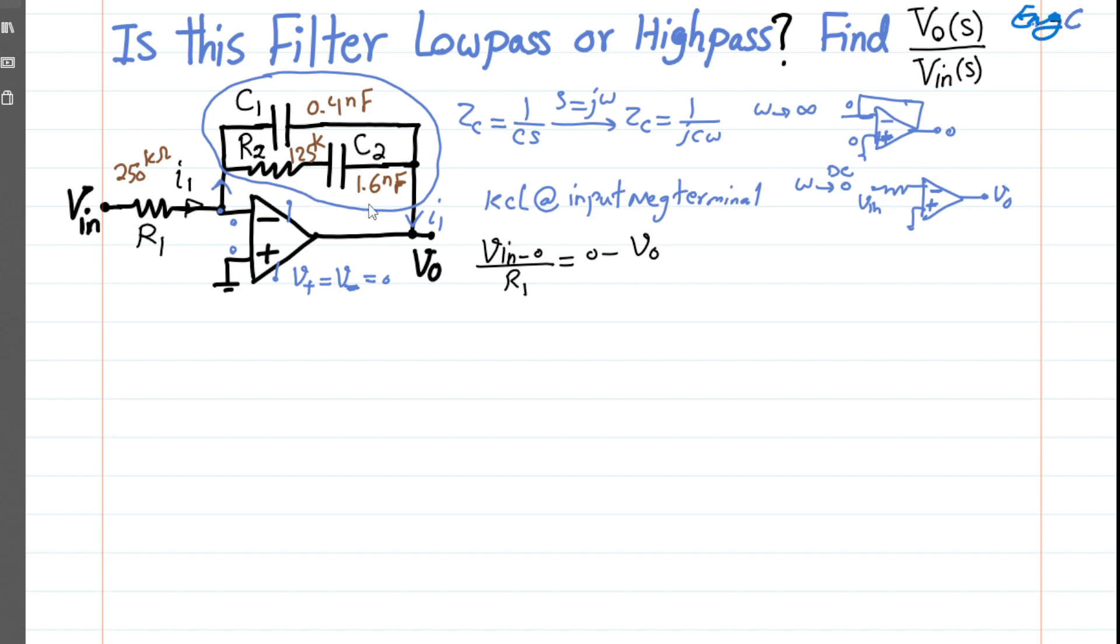That's the voltage across the feedback resistance, 0 minus V_out, divided by the total impedance that we have, which is 1/(C1·S) in parallel with R2. As you can see, C1 is in parallel with R2 and 1/(C2·S) in series. So R2 plus 1/(C2·S).